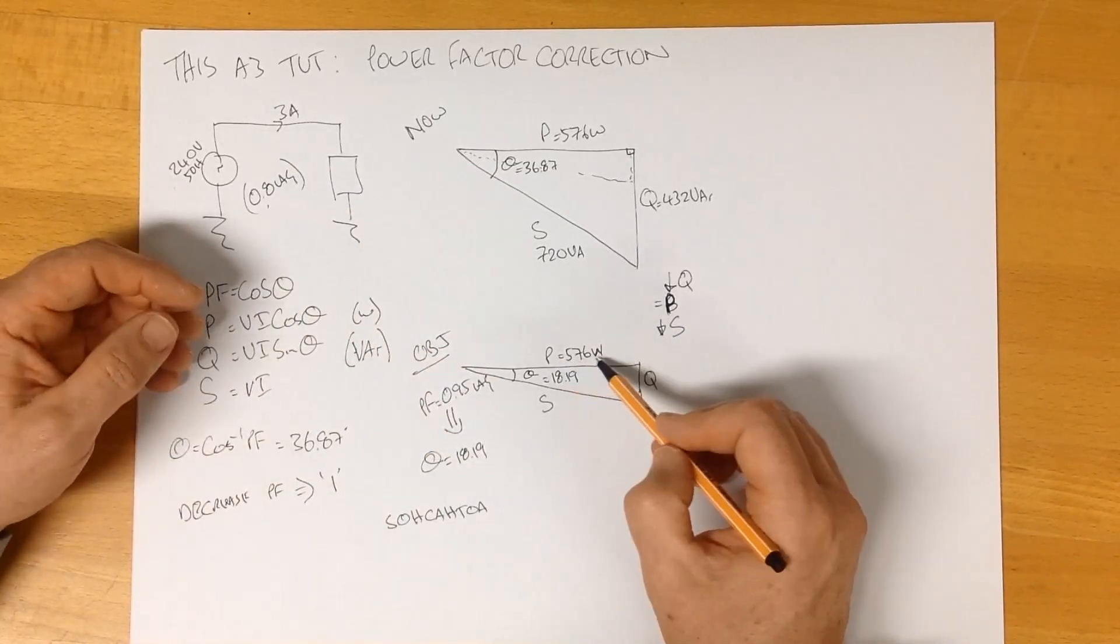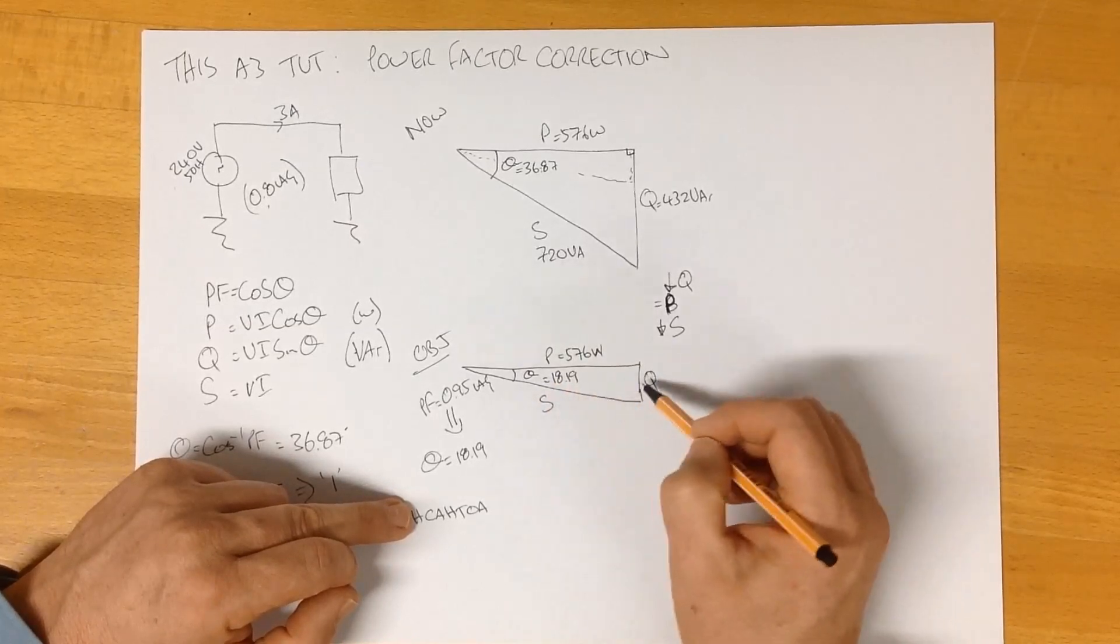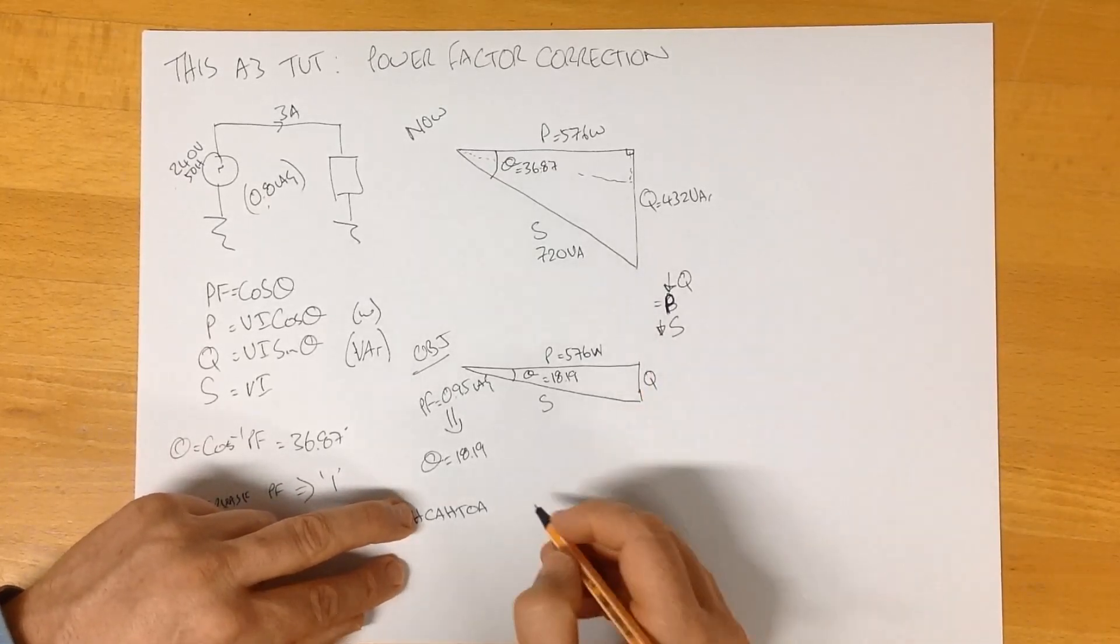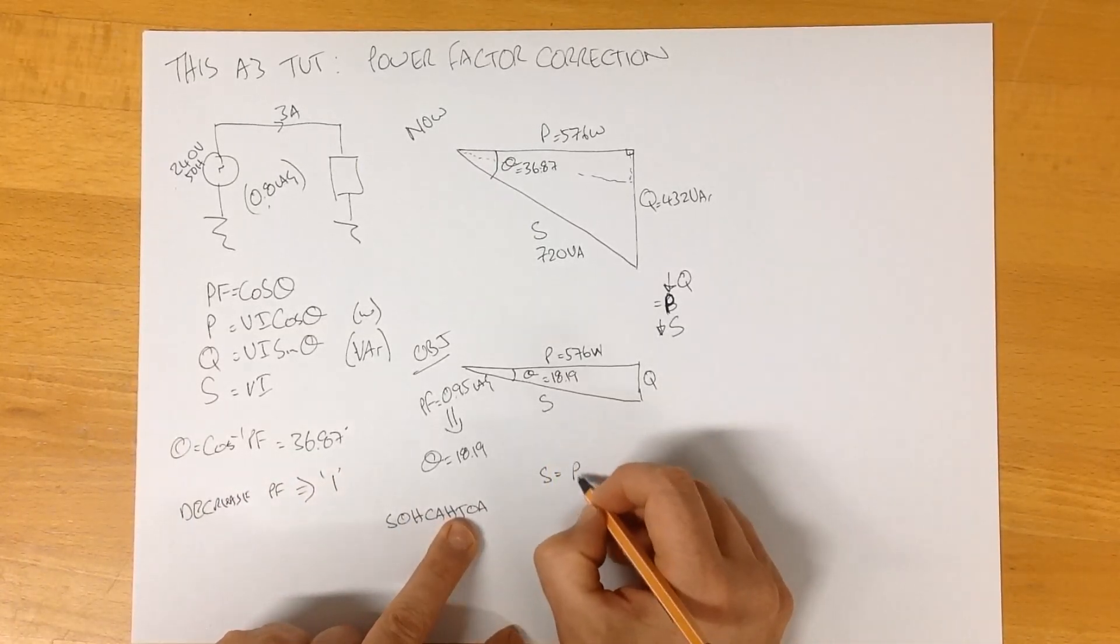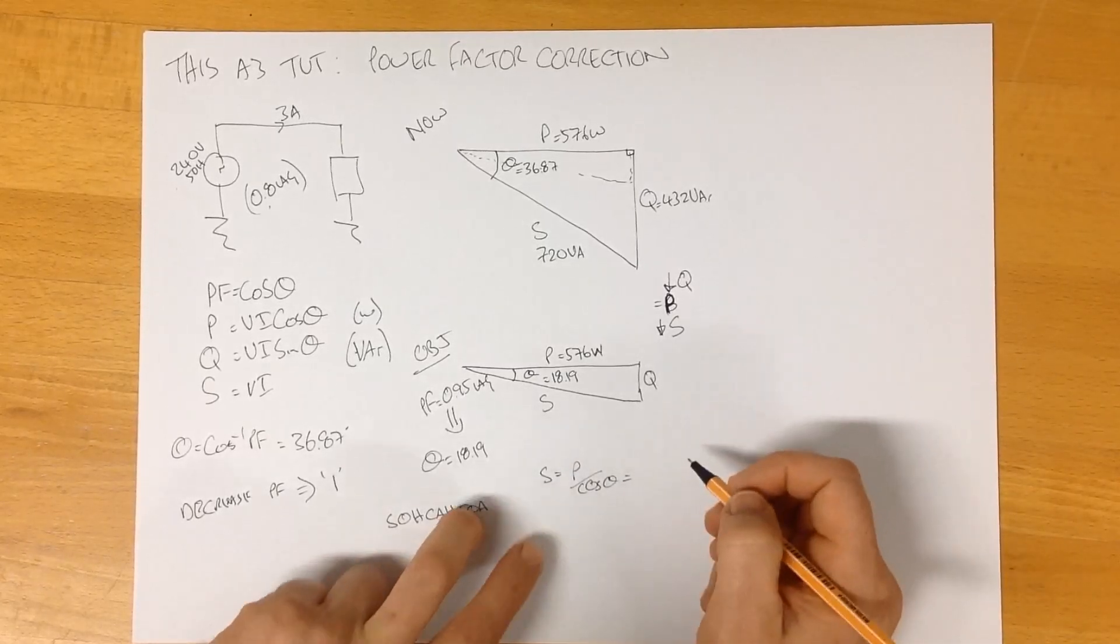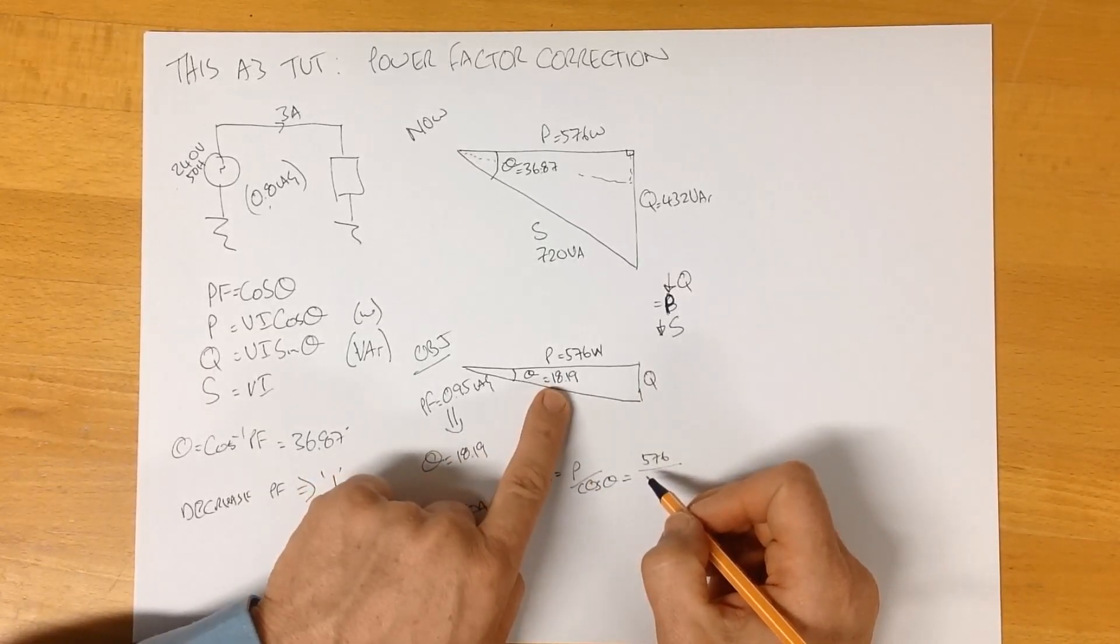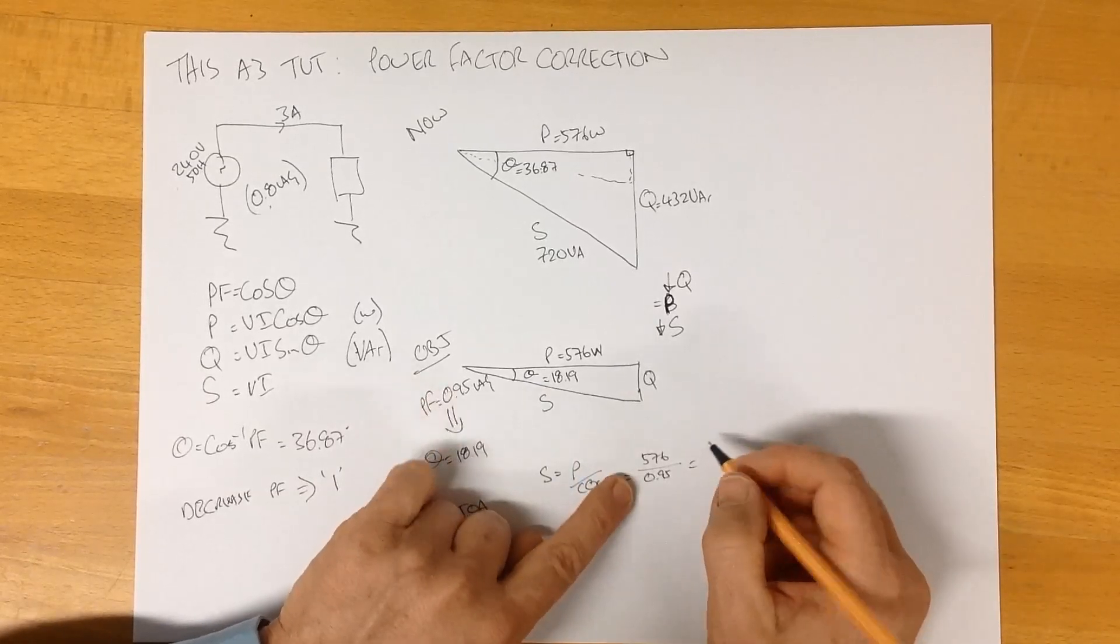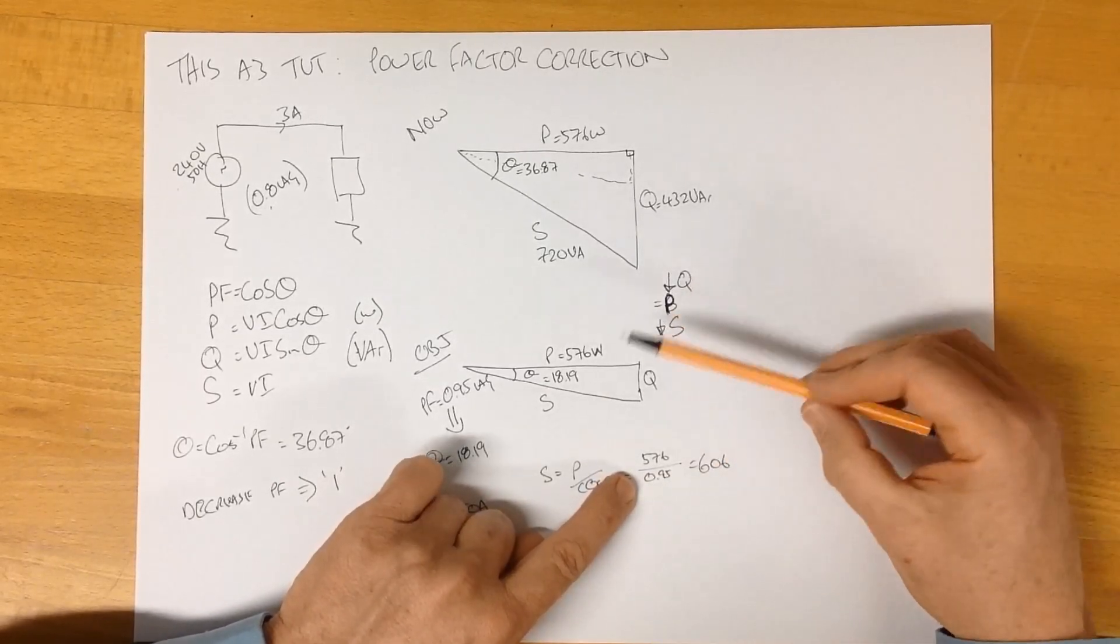So, we know our real power, which is, in terms of our rules down here, this is our adjacent. We know our angle. We need to find Q and S. We can find, for example, starting with S, using these rules here, our value of S is P over the cosine of our angle, which is 576 divided by the cosine of our angle, 18.19, which is 0.95. It's the same as our power factor. And that gives us an apparent power of 606 VA. So, we can quickly check our calculations here.